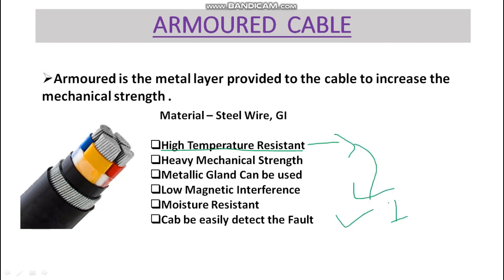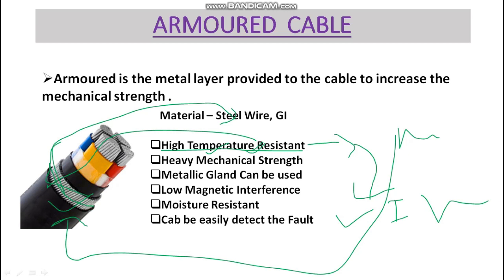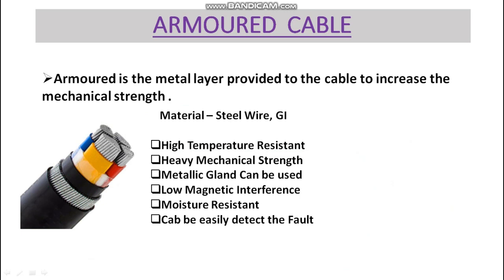The first advantage is high temperature resistance. It can withstand high temperatures — for example in industries where furnaces or other heat-generating activities create high ambient temperatures. The steel armor wire provides protection against high-temperature environments, which is why armored cable is preferred in industrial applications.